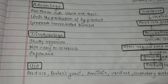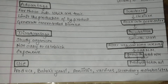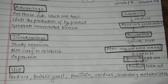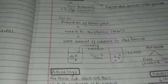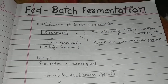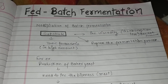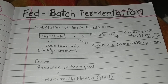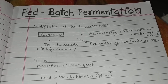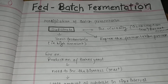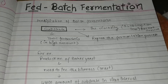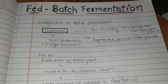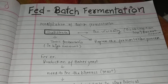Here are the uses of fed-batch fermentation: we can produce baker's yeast and many secondary metabolites, for example penicillin, vaccines, etc. In fed-batch fermentation we mostly produce secondary metabolites or microorganisms we want to grow, for example single cell proteins. I hope you liked the video, share it with your friends, stay tuned for more updates, and thank you.